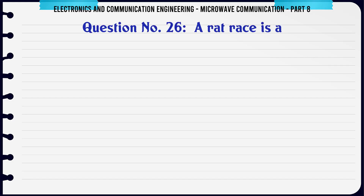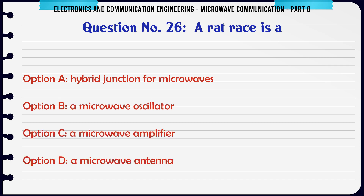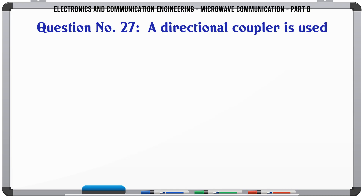A rat race is a — A. Hybrid junction for microwaves, B. A microwave oscillator, C. A microwave amplifier, D. A microwave antenna. The correct answer is hybrid junction for microwaves.